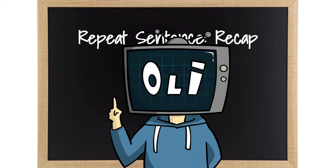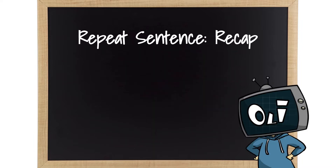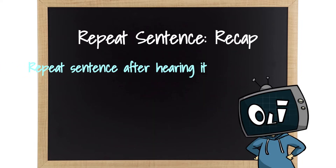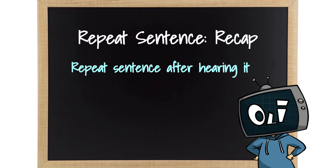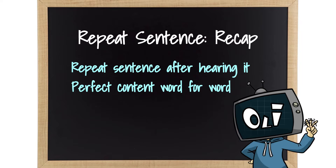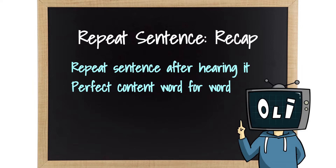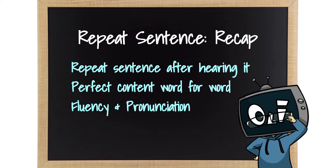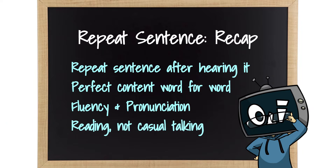Let's quickly go through what you have to look out for when practicing Repeat Sentence. You will hear a sentence in the audio, and then you will have to recite it after just 3 seconds of preparation. You get a 3 for content only if you perfectly repeat the whole thing without any omission, insertion, or replacement of words. As with most speaking questions, always keep an eye on your fluency and pronunciation — remind yourself that you're essentially reading out the sentence with a script formed from your notes and memory.